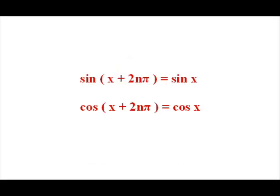The functions cosine and sine are periodic functions. The function f is periodic with period a if a is the smallest positive real number with f of x plus a equals f of x for all x in the domain of f. So sine and cosine are periodic functions with period 2π, whereas the tangent function is periodic with period pi, and the same for the cotangent function.